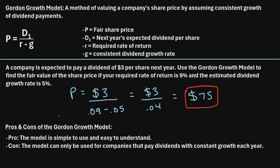There are a couple of obvious pros and cons of this model. The pro is that the model is simple to use and easy to understand. But the major con is that the model can only be used for companies that actually pay dividends with constant growth each year. In many cases it's not realistic to assume constant dividend growth in perpetuity, and many companies don't even pay dividends at all, so this model couldn't be used to value those companies. Keep that in mind when considering using the Gordon Growth Model.